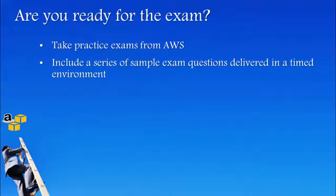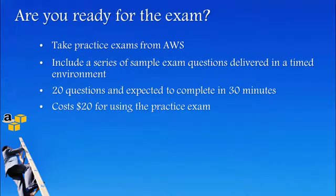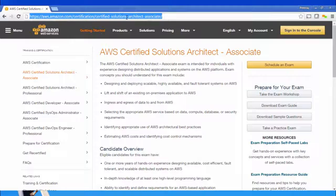The Associate certification practice test includes 20 questions and you are expected to complete them in 30 minutes. It does not come free — you will have to pay 20 US dollars for using the practice test. Amazon's testing partner is Criterion.